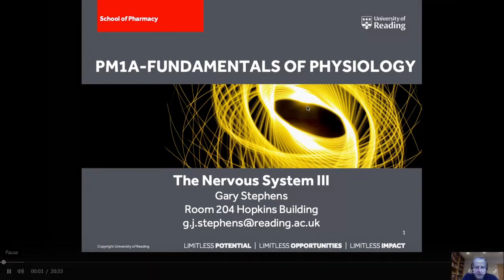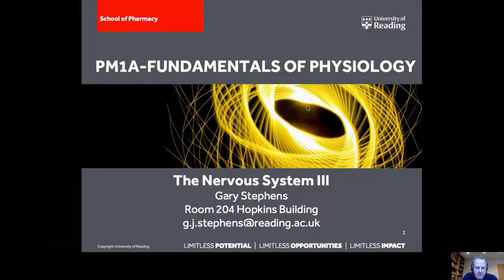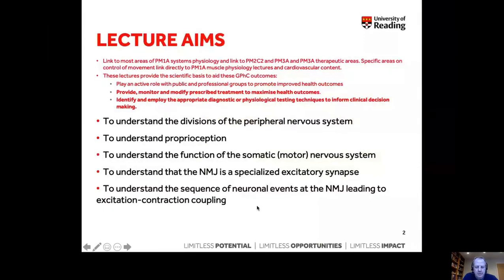This is the seventh screencast in the series on the nervous system. Just to remind you, normally we have three one-hour lectures entitled Nervous Systems One, Two, and Three. Screencasts one to three were associated with the Nervous System One lecture, screencasts four, five, and six with Nervous System Two, and the next set of screencasts — probably seven, eight, and nine — will be associated with Nervous System Three.